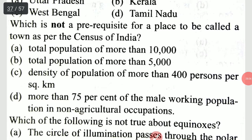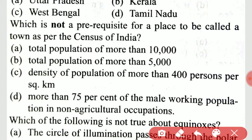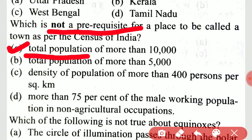Which is not a prerequisite for a place to be called a town as per the census of India? It is option A: total population of more than 10,000 is not a prerequisite.